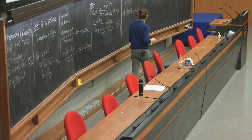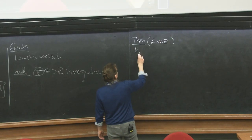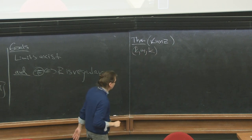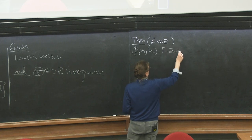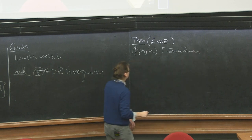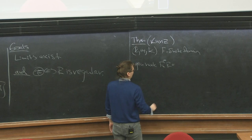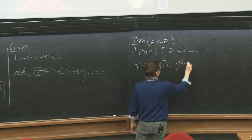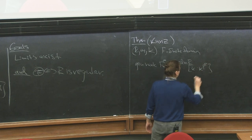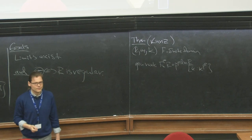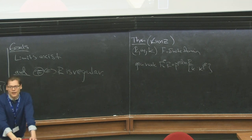I want to understand the denominator — the rank of F lower star E R — a bit better. For that reason I want to quote another wonderful result of Kunz, which says: if we take a local ring with residue field k, still a domain, then the generic rank is given by p to the power e times the dimension of R, times the residue field extension degree [k^{1/p} : k]. Essentially it's a formula that tells me how to compute the generic rank.